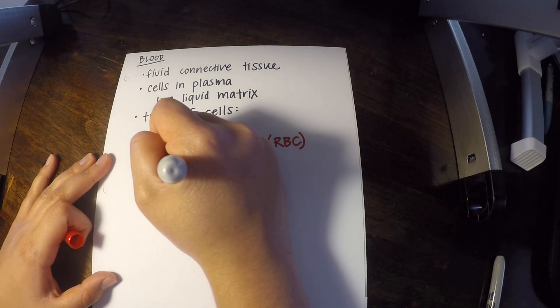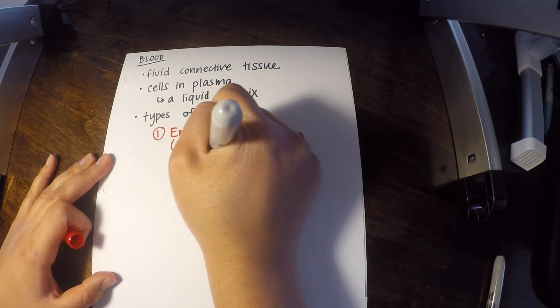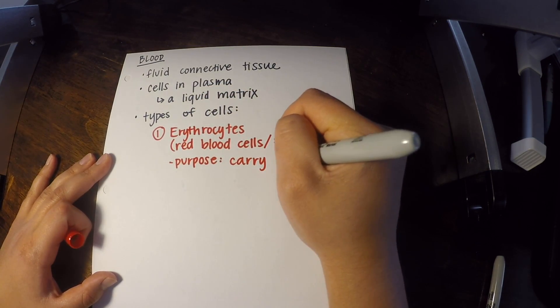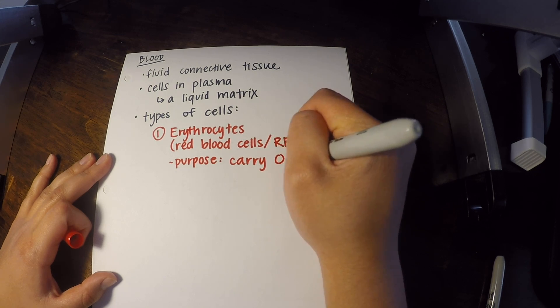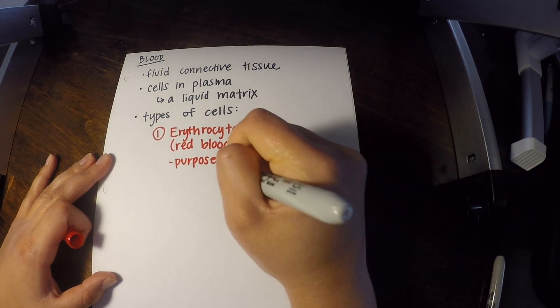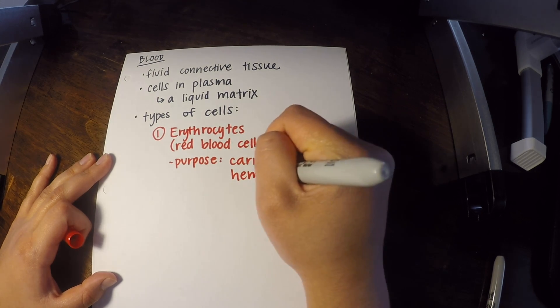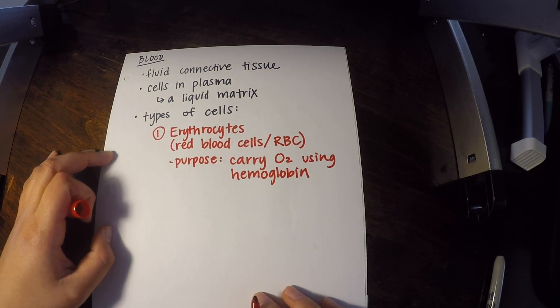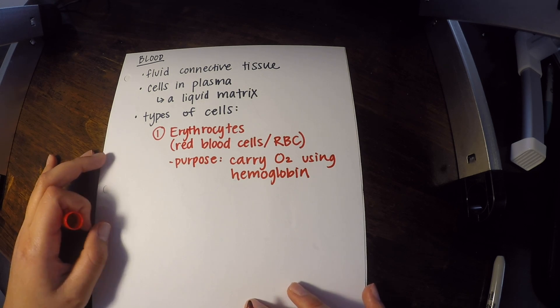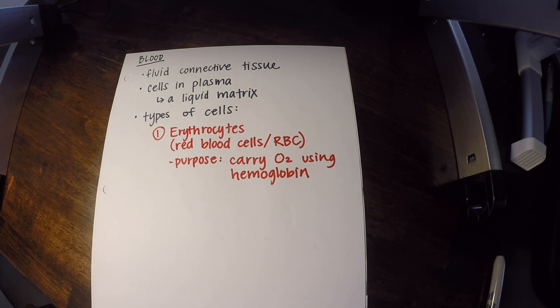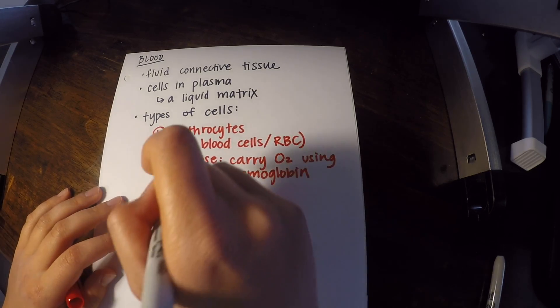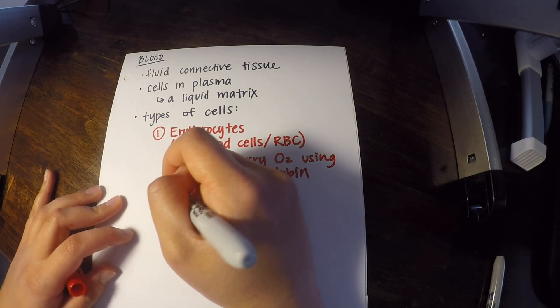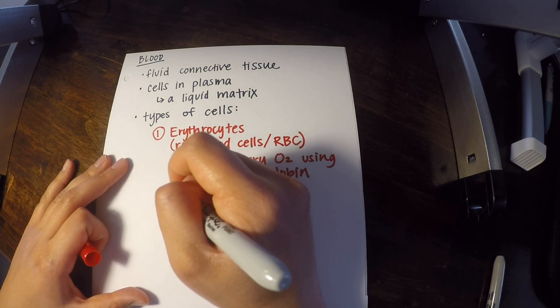Now the purpose is to carry oxygen using hemoglobin to do so. That's pretty much all you need to know about erythrocytes. And one last thing is that they're the most numerous or kind of most common in the blood. So the blood is filled with mostly red blood cells.